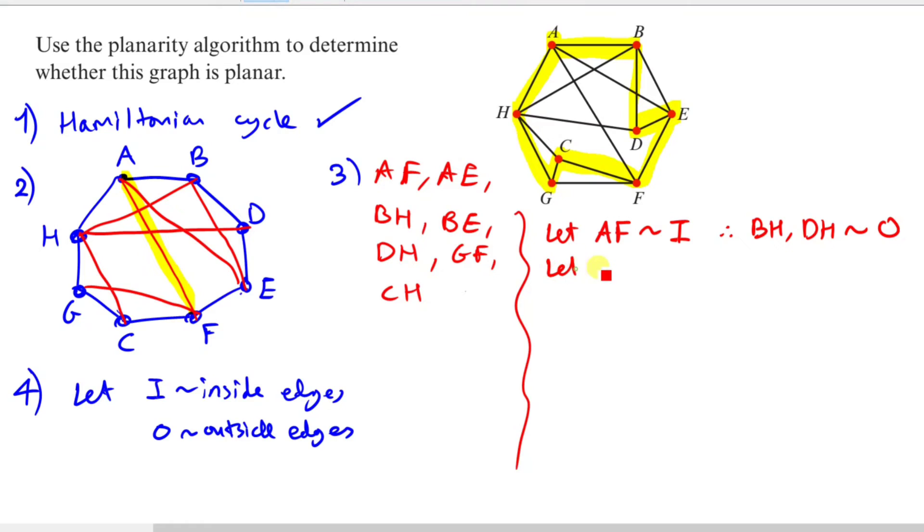Next, let's pick a new one: AE. We're going to keep going in order. Let AE be inside. AE is inside, so let's highlight AE. We find that both BH and DH again are also the same. So the same story applies.